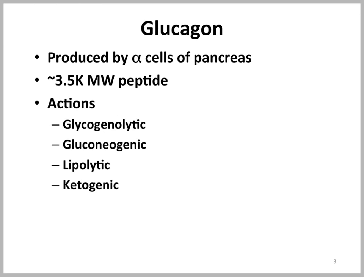Glucagon is a small peptide hormone. The molecular weight is only about three and a half kilodaltons. It is produced by alpha cells of the pancreas, and it's produced as a pro-hormone called pro-glucagon. Its actions are catabolic, so it is glycogenolytic, gluconeogenic, lipolytic, and ketogenic.